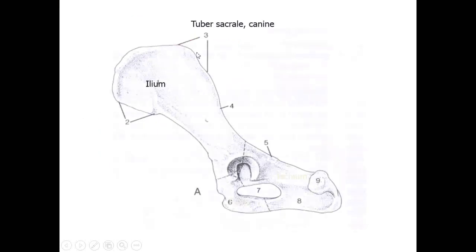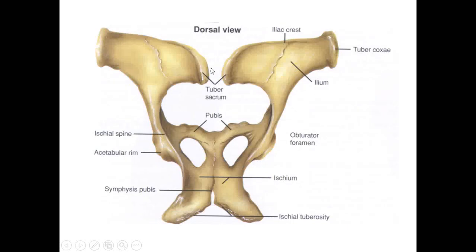Here's the tuber sacrali of a dog — this area right here. This is the ilium. Here's the tuber sacrali on a horse — very close together, which is why you can't palpate S1 but can palpate S2. And here's the ilium of a horse — oriented on a much more vertical, almost flat plane.